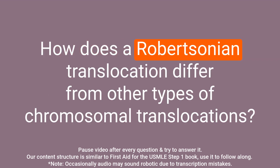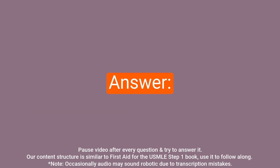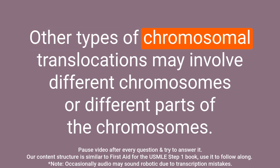Question: How does a Robertsonian translocation differ from other types of chromosomal translocations? Answer: A Robertsonian translocation specifically involves the fusion of the long arms of two acrocentric chromosomes at the centromere with the loss of the short arms. Other types of chromosomal translocations may involve different chromosomes or different parts of the chromosomes.